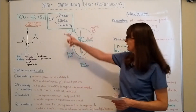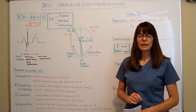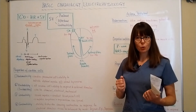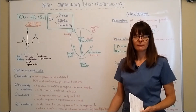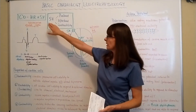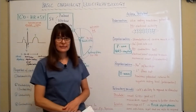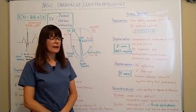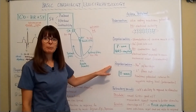The third principle is contractility, which is really what relates to the cardiac conduction system. Contractility refers to the ability of the heart's muscle fibers to lengthen and shorten in order to produce cardiac output, just like a skeletal muscle. When we talk about contractility, we have to talk about action potential. From basic physiology, there are three different stages: polarization, depolarization, and repolarization.